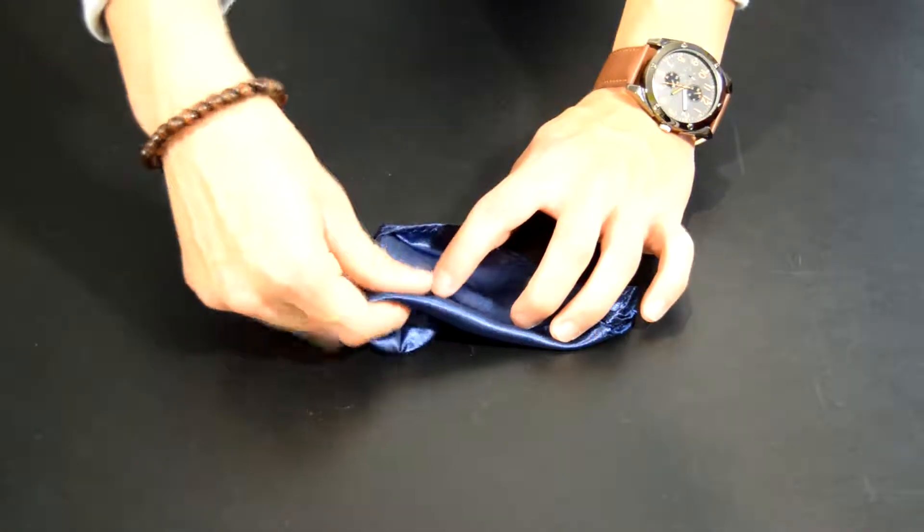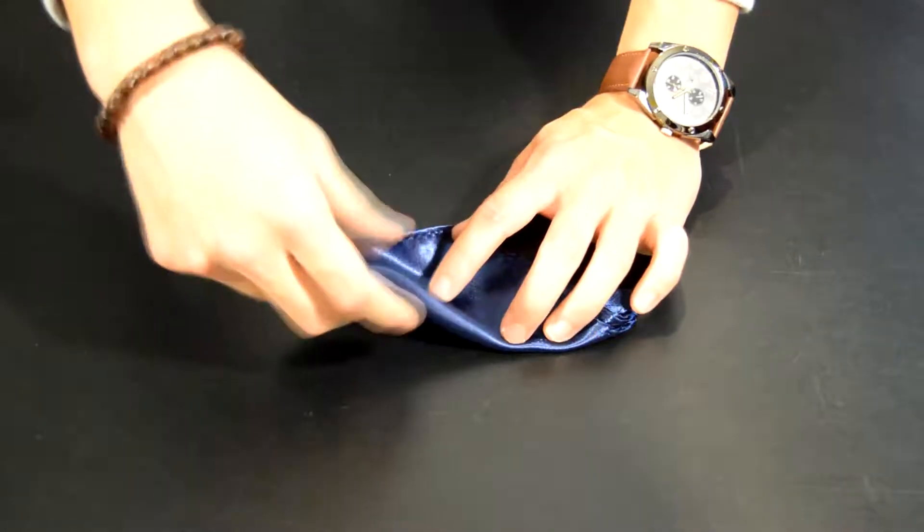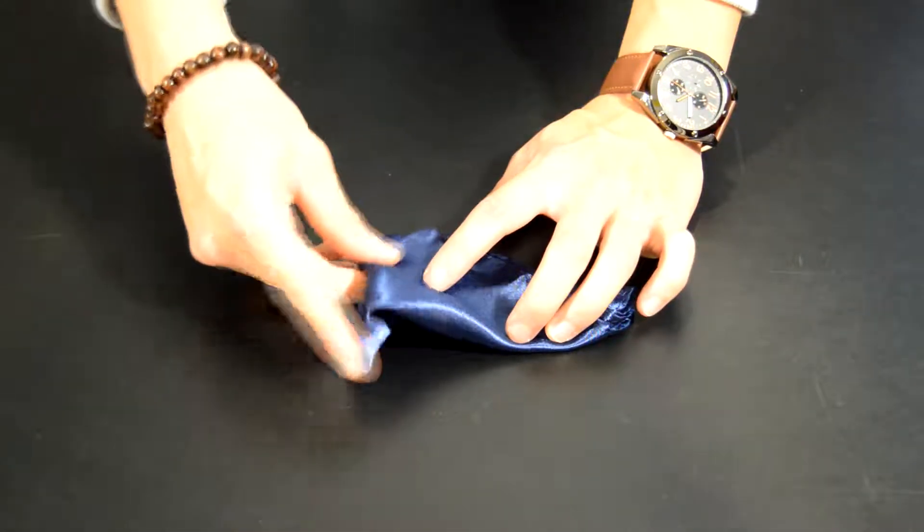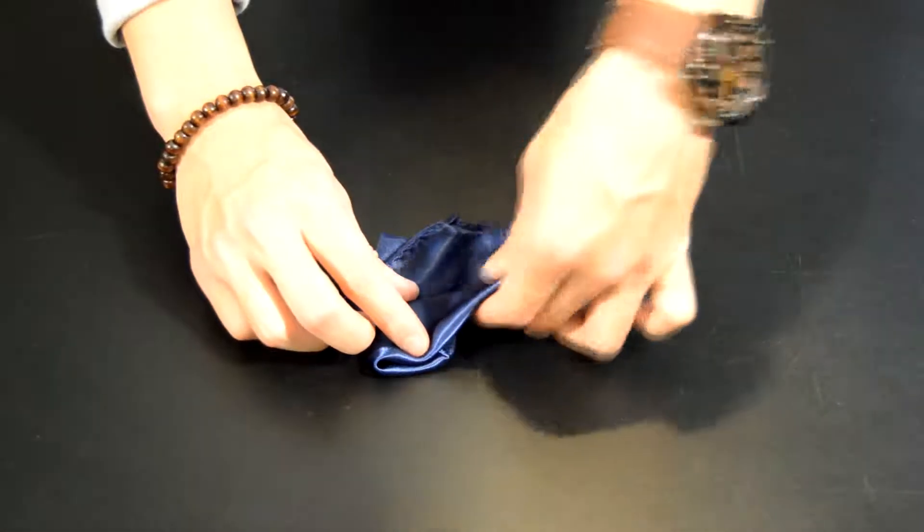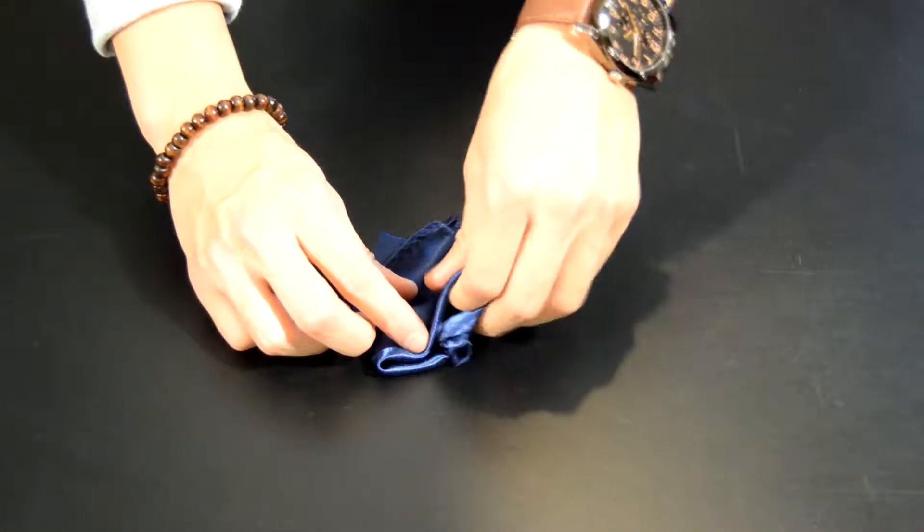Tuck in the sides to the width of your breast pocket so it fits in nice and well. After doing that, you pretty much have the pyramid fold.